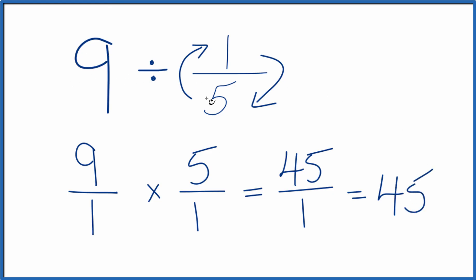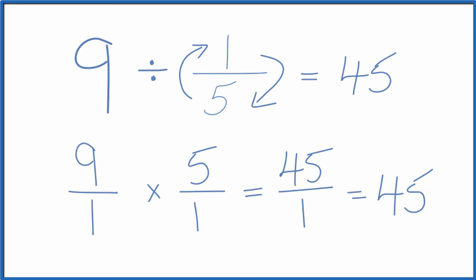So in answer to our question, 9 divided by 1 fifth equals 45. If you multiply 45 by 1 fifth, you get 9. This is Dr. B, and thanks for watching.